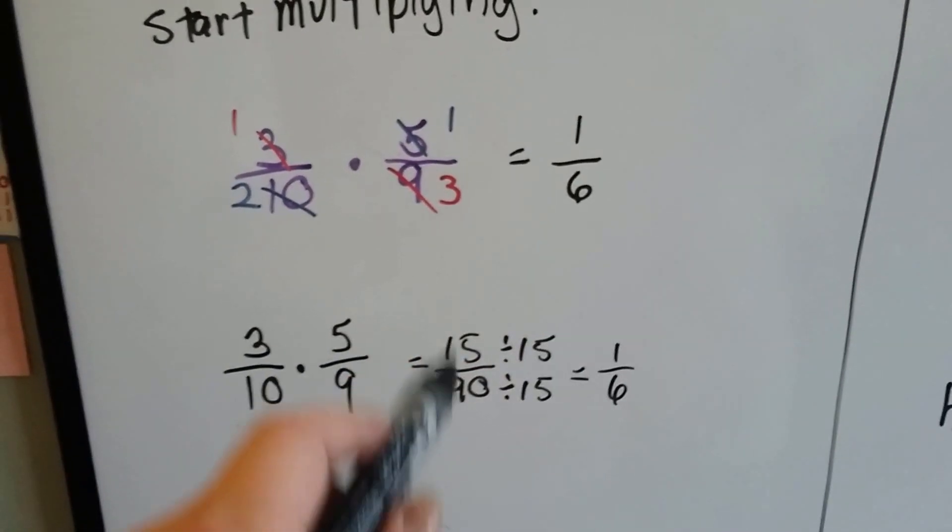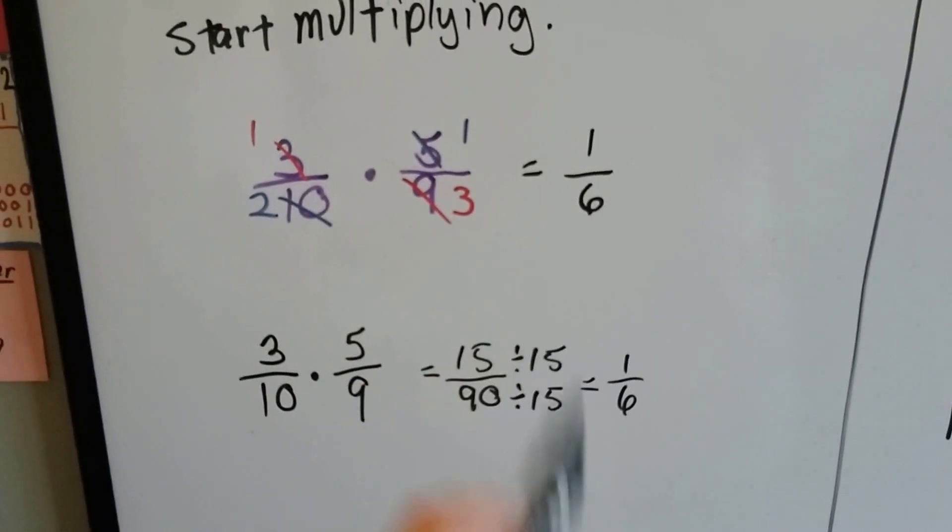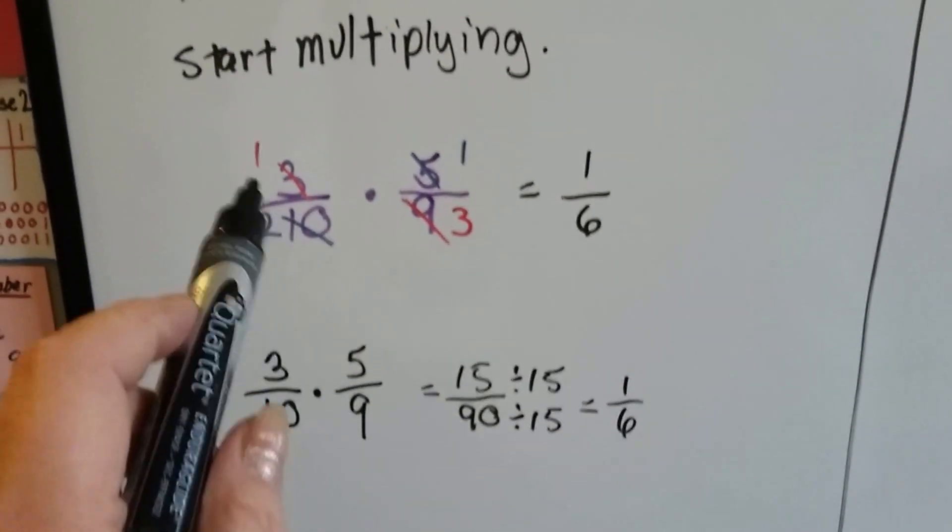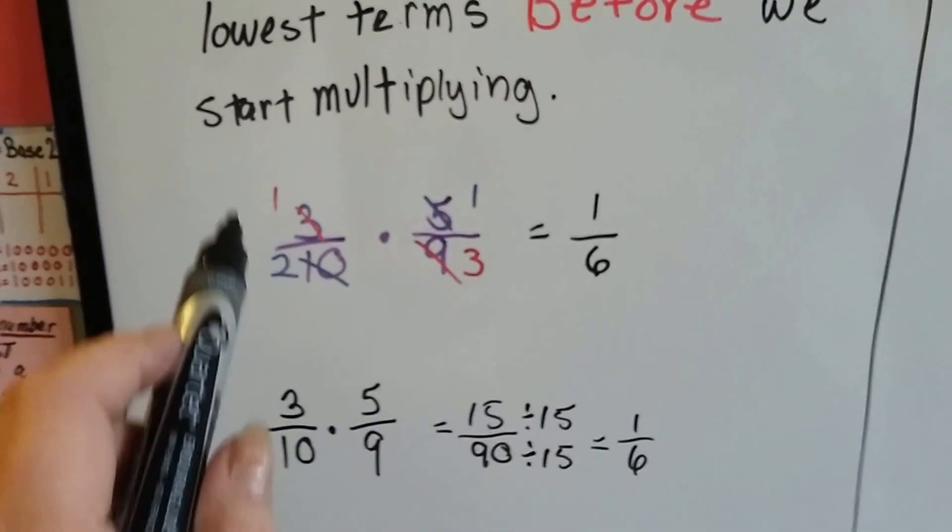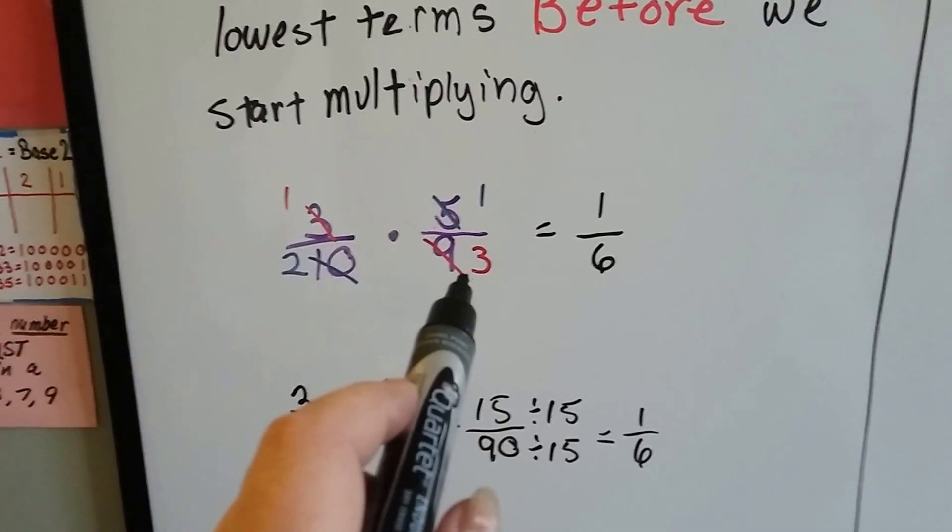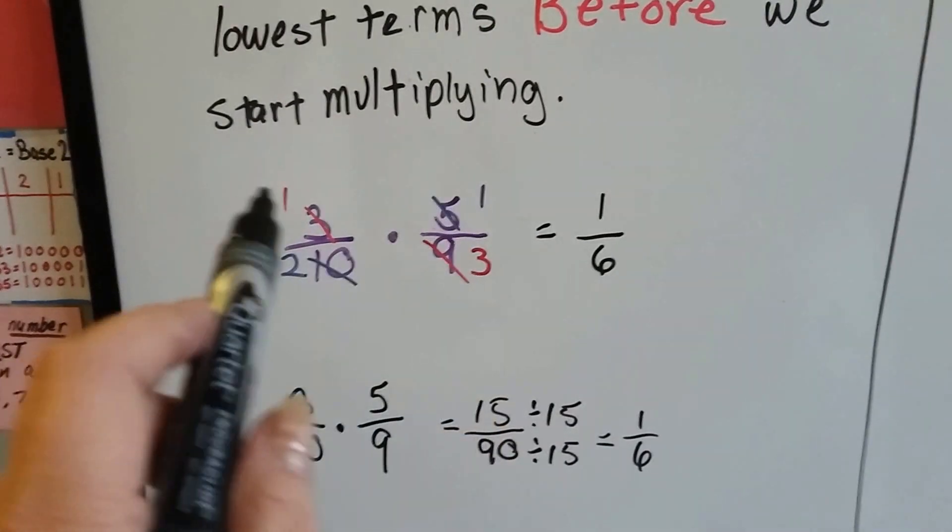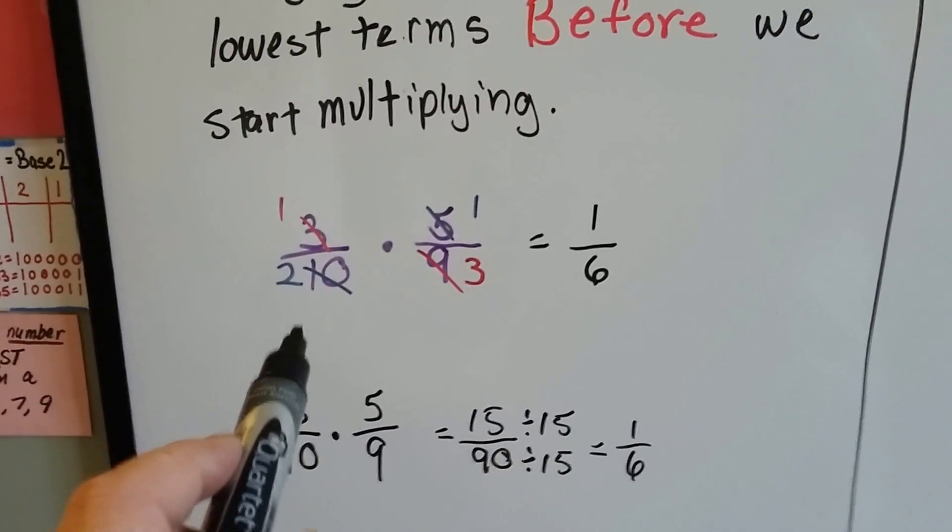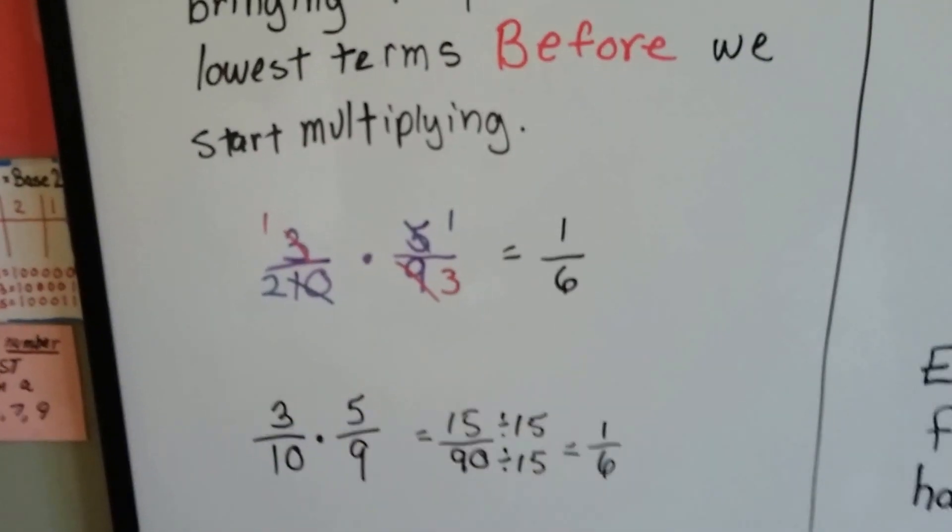Most people would try 5 and they'd be reducing to lowest terms and driving themselves crazy. So by cross dividing this way and using the greatest common factor between the numerators and denominators, the cross numerators and cross denominators, we can cancel out and simplify before we even begin multiplying.